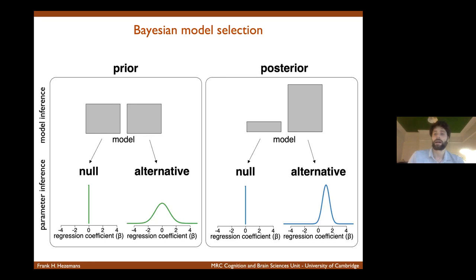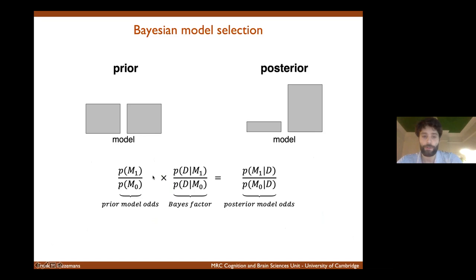And then after observing the data, not only do we update our beliefs about the parameters within each model. So the blue curves here in the bottom right, but we also update our beliefs about the models. And how this actually works is, in this case, you compute the marginal likelihood for each model. So the probability of the data given a model, that's the Bayes factor, the ratio for those two models. And you use that to update the prior model probabilities to derive the posterior model probabilities.